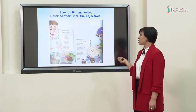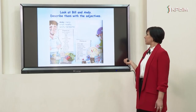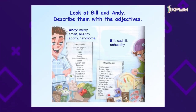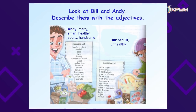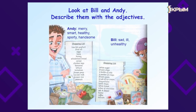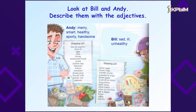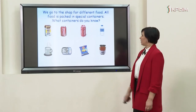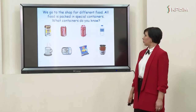Right you are. Now open your books and look at Bill and Andy. Try to describe them with the adjectives. Andy looks merry, smart, healthy, sporty and handsome, but Bill looks sad, ill and unhealthy. Why is it so? Pay attention to their shopping lists. Andy has got a lot of fruits and vegetables in his shopping list.